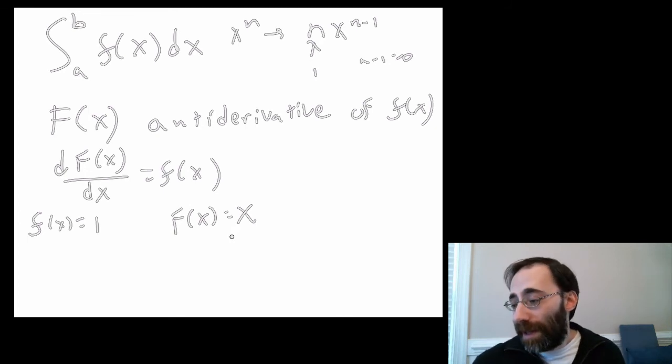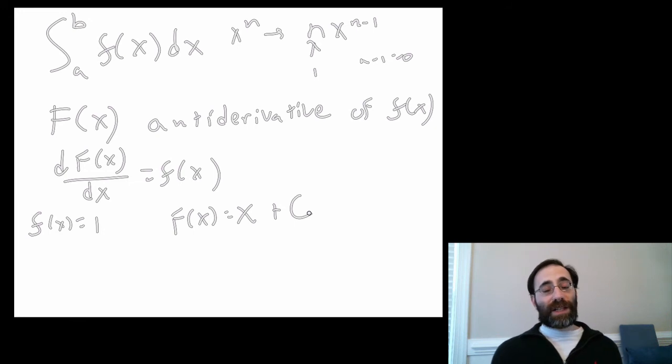So in general, the entire class of functions, x plus some constant C, that's capital C there, are going to be possible antiderivatives for the function 1. This constant C is called the constant of integration, as we'll see in a second. So there's a class of functions that work as antiderivatives. But here, we found one that's just the opposite of 1.